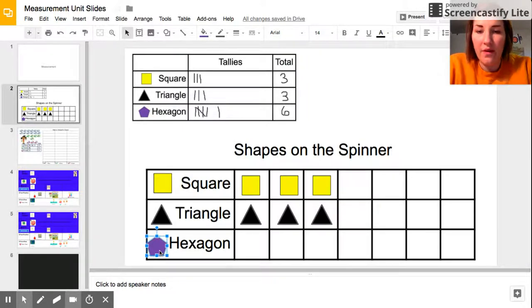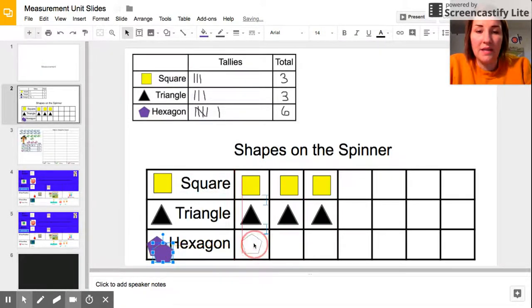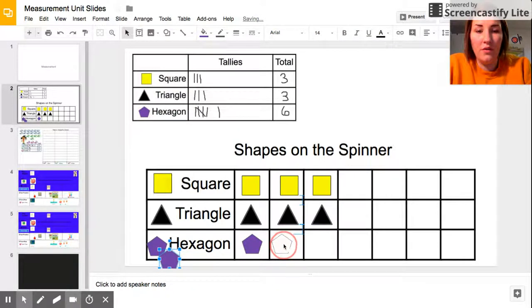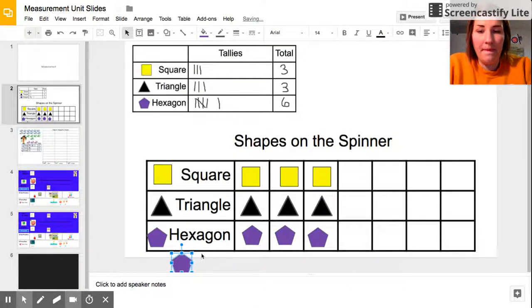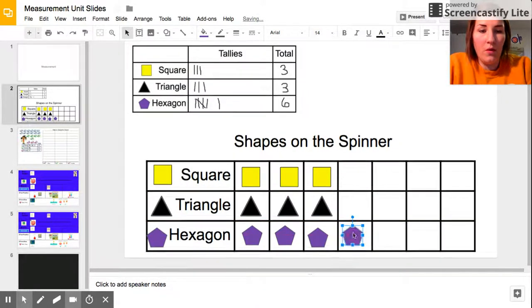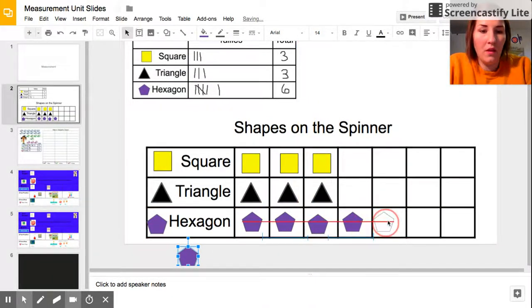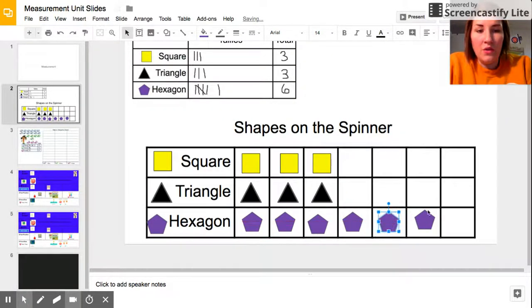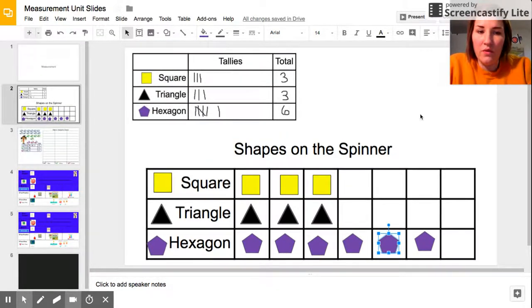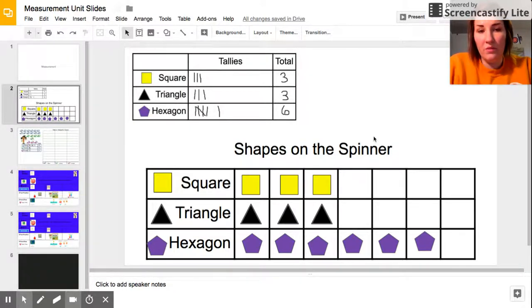Finally we have our hexagons. That was landed on six times, so we will need six hexagons within our graph. Really, our pictograph is just another way to show the same information that we put in our tally chart. It's just a lot easier for a lot of people to look at it visually with pictures on a graph rather than looking at a bunch of numbers.